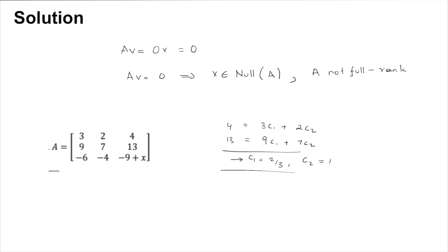Now of course, since we are saying that we can linearly combine these two to get this column, the same two constants should work. So minus 6c1 plus minus 4c2 should be equal to minus 9 plus x.